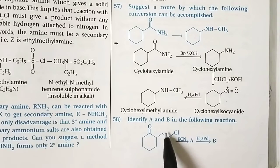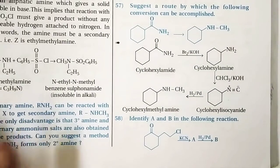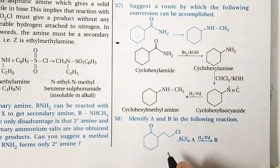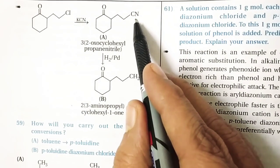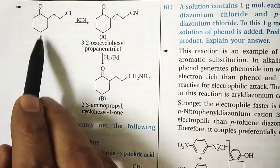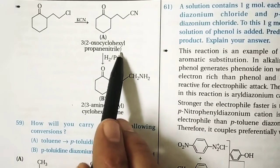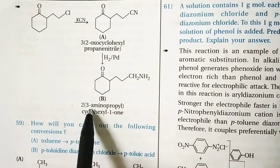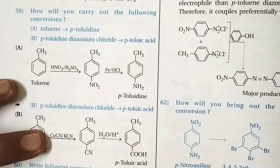Question 58: Identify compounds A and B. The starting material reacts with KCN via nucleophilic substitution to introduce a C≡N group. Reduction of C≡N gives a CH2NH2 group. The compound 2-(2-chloroethyl)cyclohexan-1-one undergoes nucleophilic substitution with cyanide to give 3-(2-oxocyclohexyl)propanenitrile. Catalytic hydrogenation then gives 2-(3-aminopropyl)cyclohexan-1-one, which is compound B.